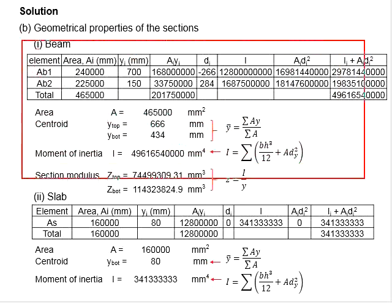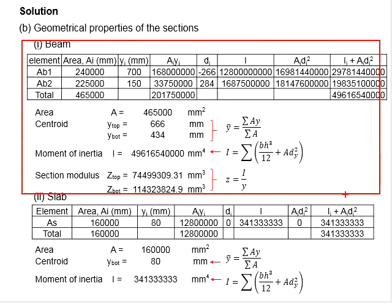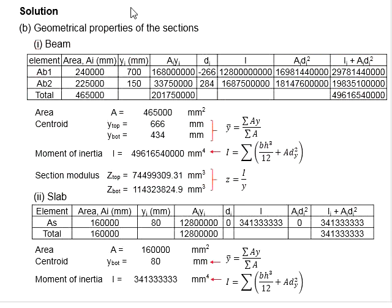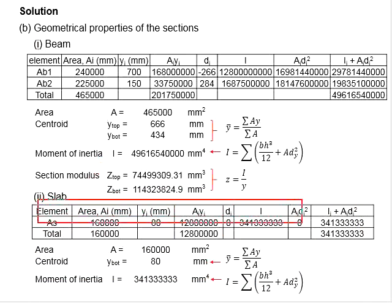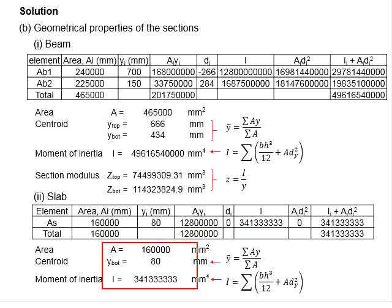Now that you have calculated the properties of the beam section, you need to do the same for the slab. The same tables apply and you will be able to obtain the area of the slab, the centroid, and also the moment of inertia.